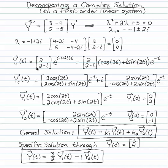And now I form my complex solution, complex eigenvector e to the complex eigenvalue t. I split the e to the minus 1 plus 2i t into e to the minus t and cosine 2t plus i sine 2t.